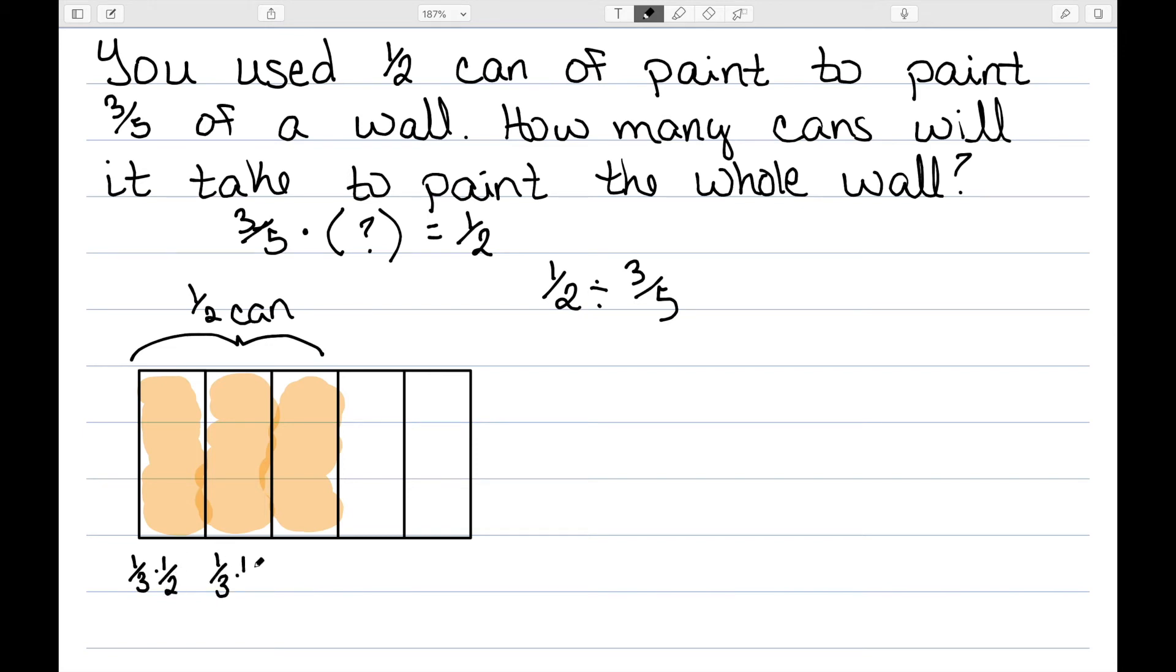So each one of these would be 1 over 3 times 1 half, since each one of these pieces had to use 1 third of the total amount that we've used, half of a can.